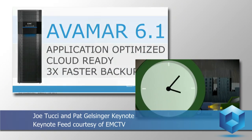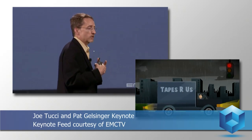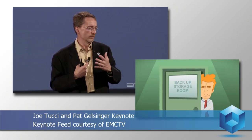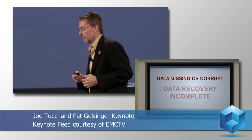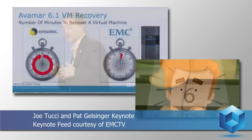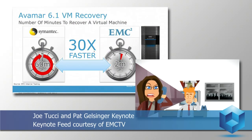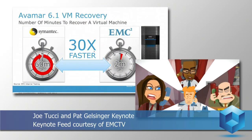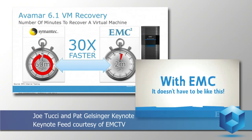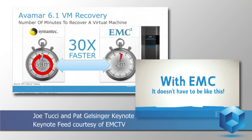Today we're also announcing Avamar 6.1 - application-optimized backup environments with enhancements for cloud-ready VMware environments and most powerfully significant improvements for Hyper-V environments. With Avamar 6.1, there's a 3x improvement in backup performance. And while 3x is impressive, recovery is even more impressive - 30x faster than the next nearest competitor. A stunning improvement in both backup and, more importantly, recovery.